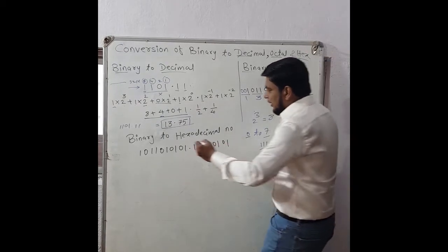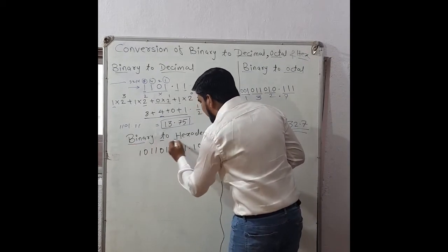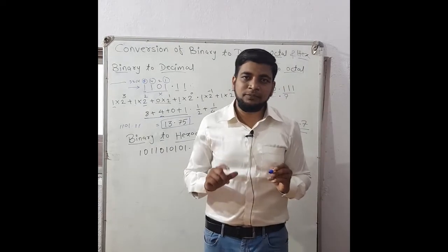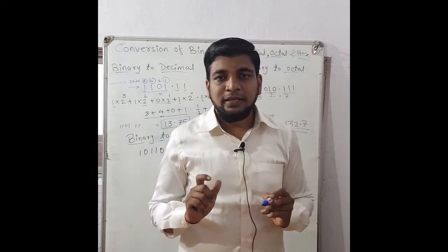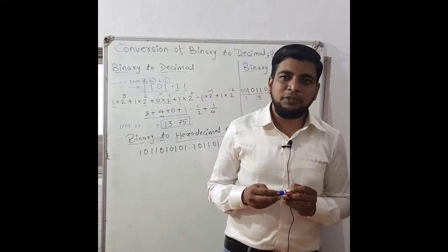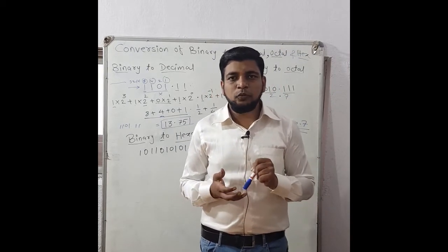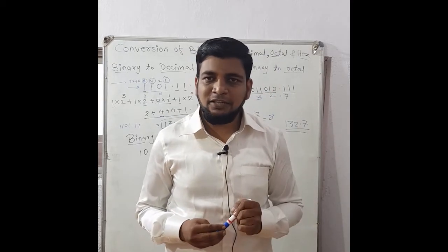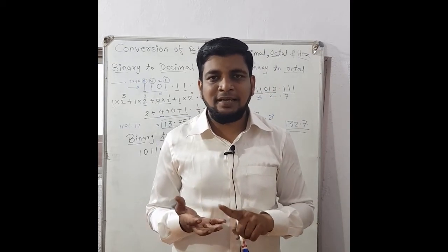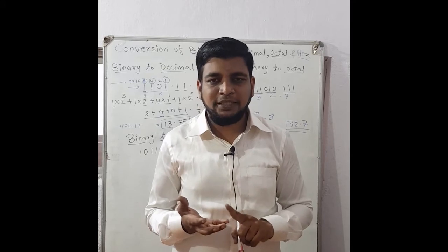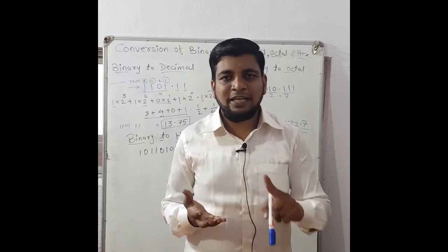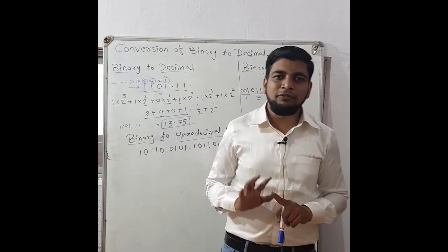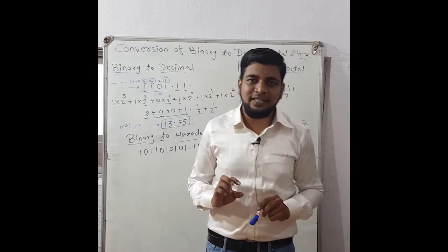Now we will see how to convert a binary number to hexadecimal number system. The hexadecimal number system has 16 possible combinations — 0 to 9 are numbers and 10 to 15 are represented as alphabets: 10 is A, 11 is B, and likewise 15 is F. So 0 to 9 and A to F — 16 possible combinations are there in hexadecimal.